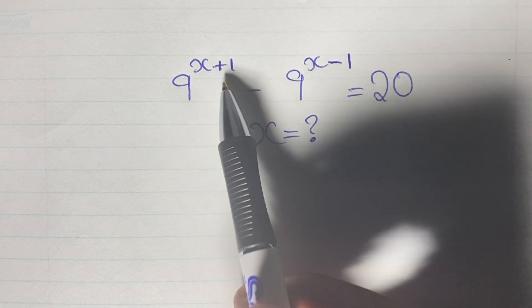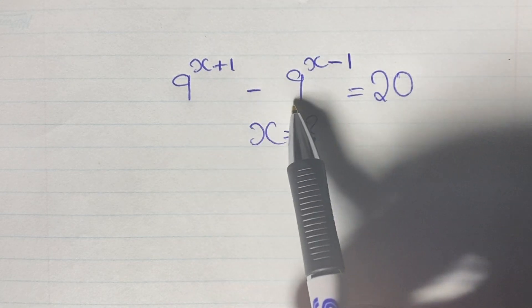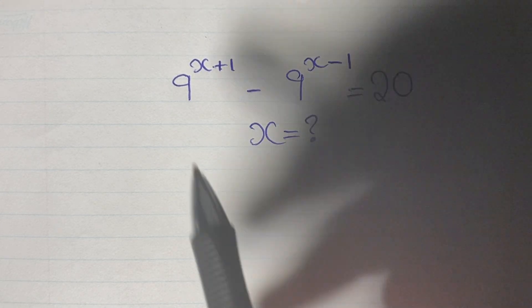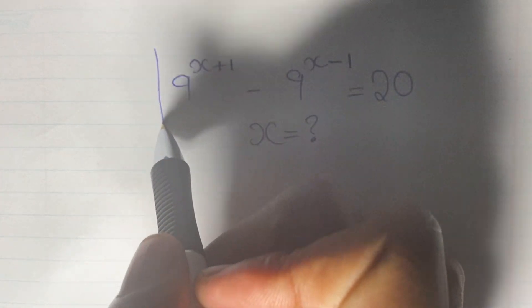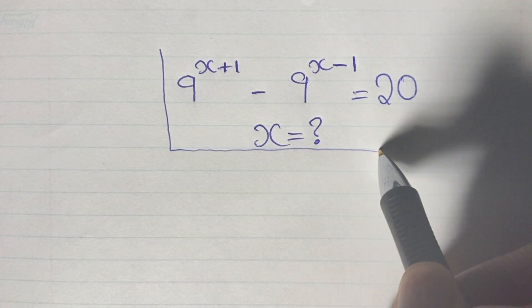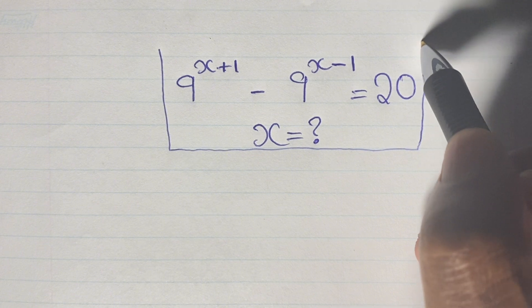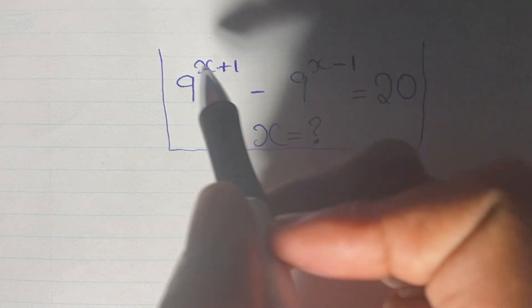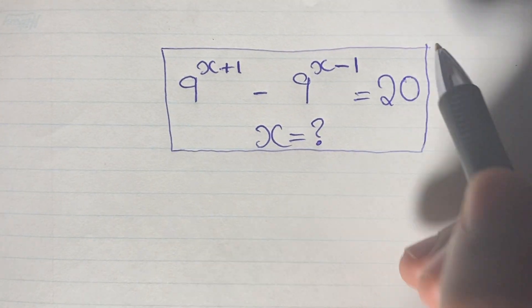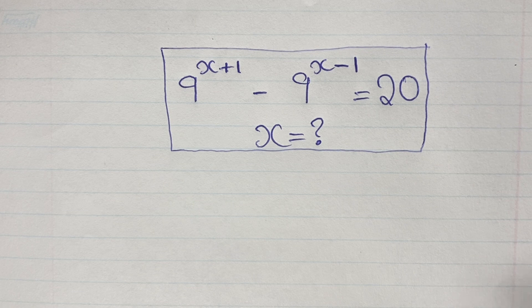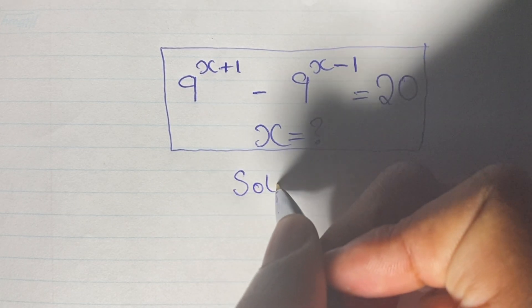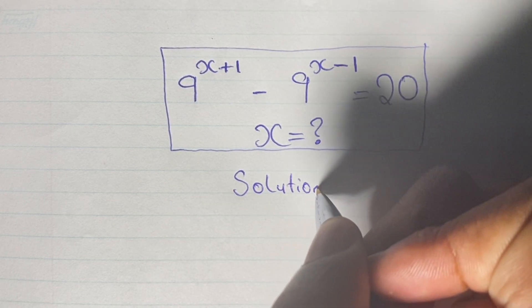Greetings again everyone, welcome back to my channel. Here we have another algebraic exponential equation that we are going to solve. We have 9 to the power of x plus 1 minus 9 to the power of x minus 1 is equal to 20, and we are given to find the value of x. If you like, you can pause this video and see if you can solve this on your own. If not, let us go ahead and do this one together.